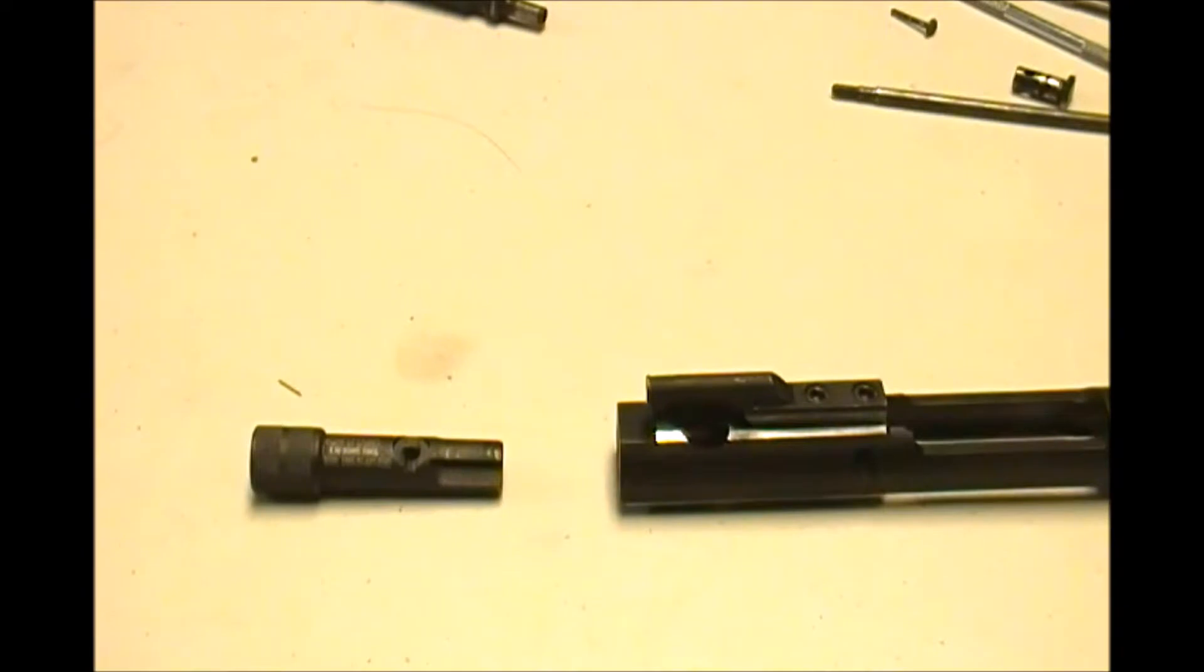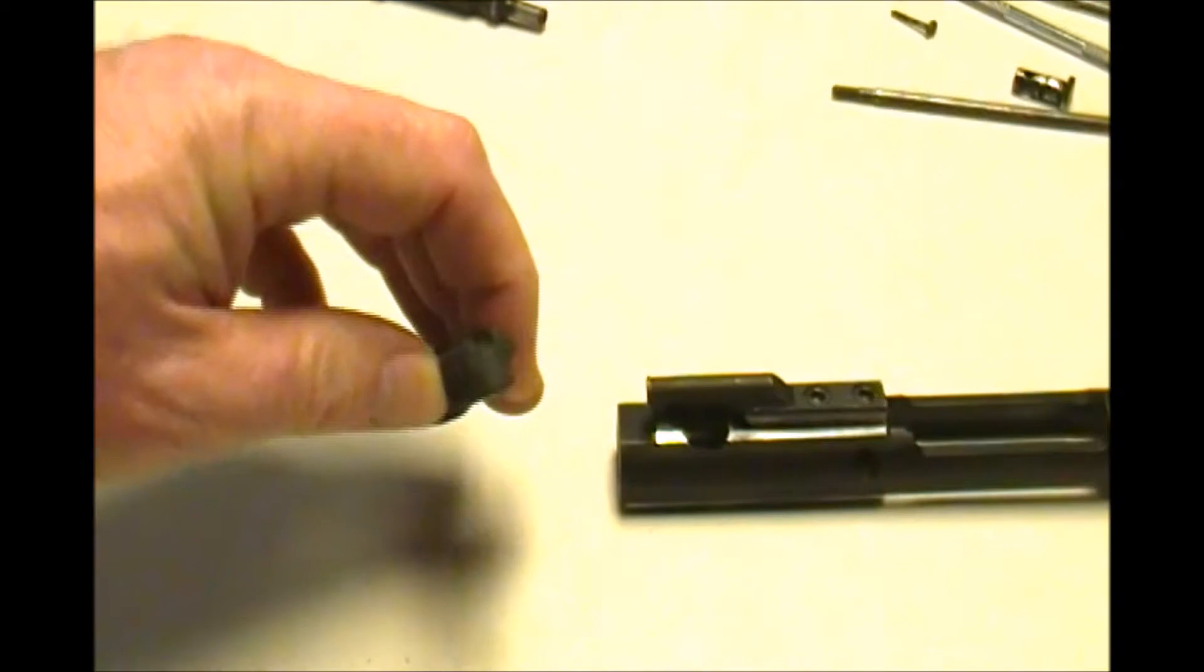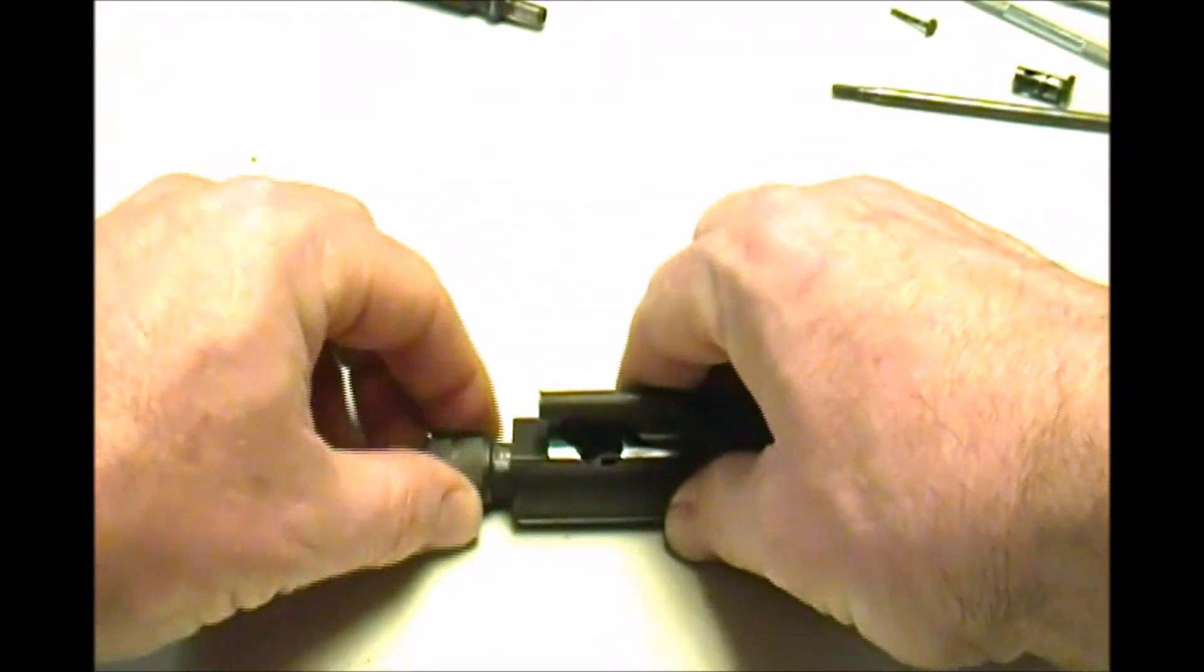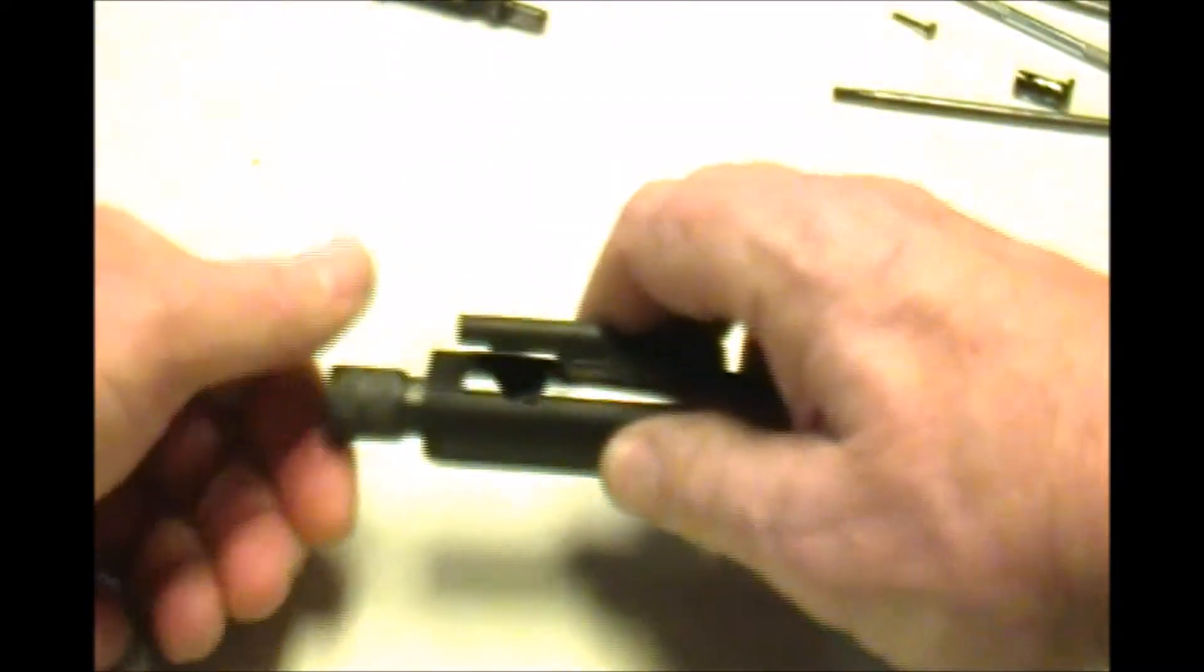The first part of using your Otis Bone Tool to clean your bolt carrier group is using this end. It's got the three flanges there to scrape inside your bolt carrier. And it just fits in like your bolt was, and then you just turn.